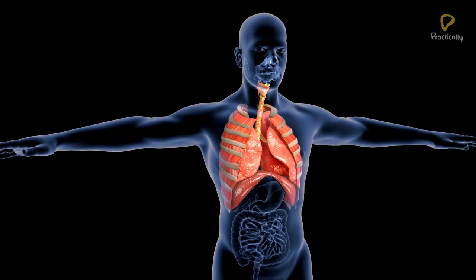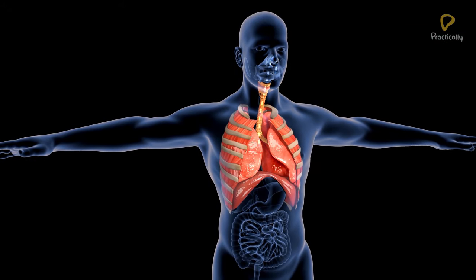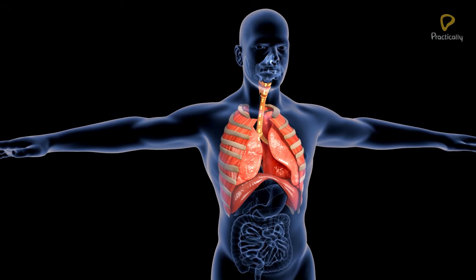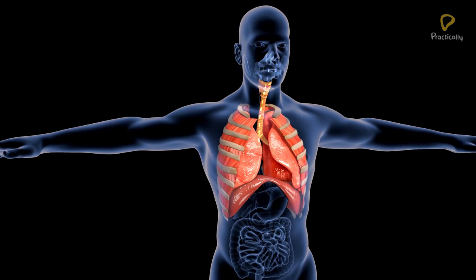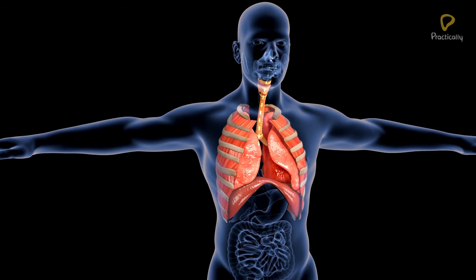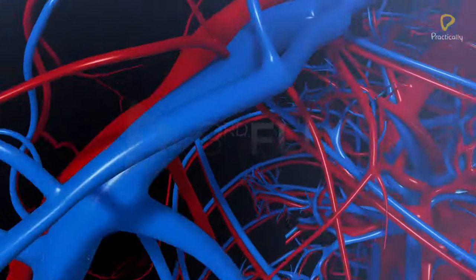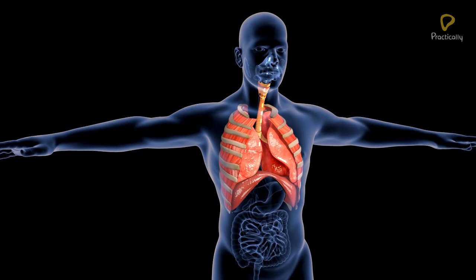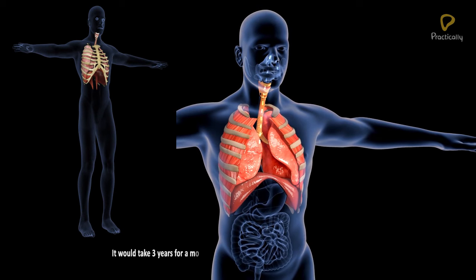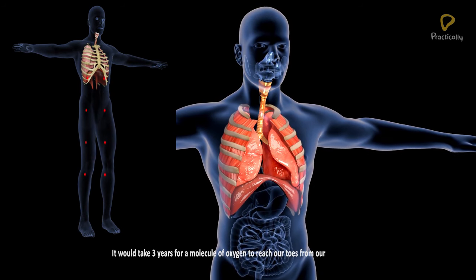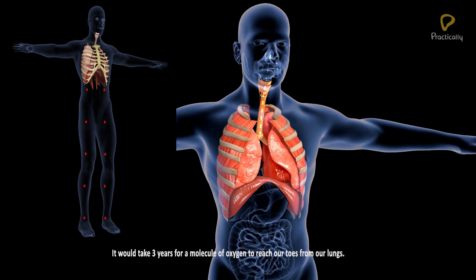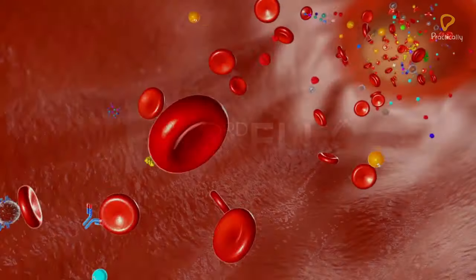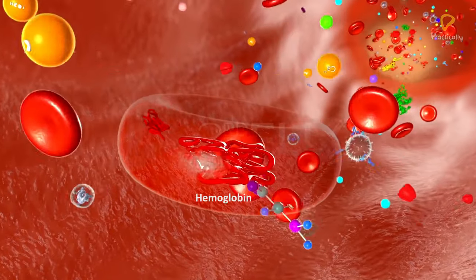When the body size of the animal is large, diffusion pressure alone is not sufficient for the delivery of oxygen to all parts of the body. Respiratory pigments are present in such animals to take up oxygen in the lungs and carry it to the tissues. If diffusion were to move oxygen in our body, it would take three years for a molecule of oxygen to reach our toes from our lungs.